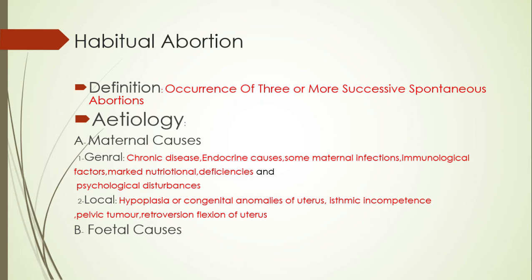What are the causes of habitual abortion? Number one: general causes — chronic diseases like diabetes, hypertension, and chronic nephritis; endocrine causes such as abnormality of thyroid gland function; some maternal infections; and immunological factors like lupus anticoagulant and anticardiolipin antibodies.